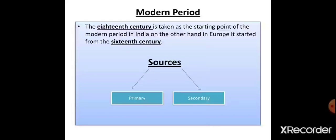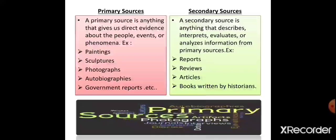In short, primary sources are the original sources and secondary sources are dependent on primary sources. A primary source is anything that gives us direct evidence about the people, event or phenomena. For example, if I see a painting, sculpture, building, monument or a coin, and I get information directly from that — that is considered a primary source.